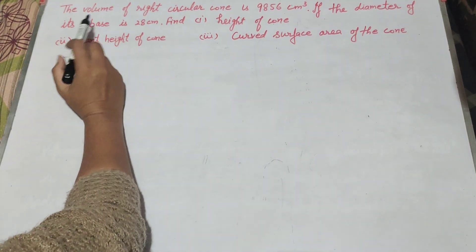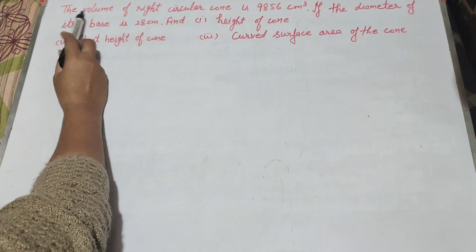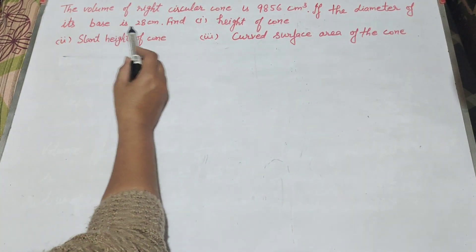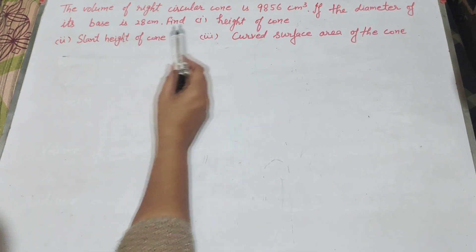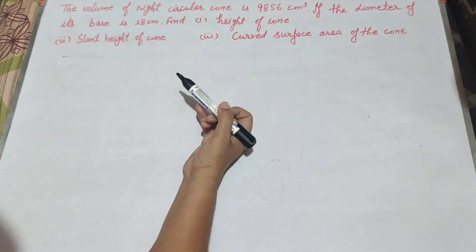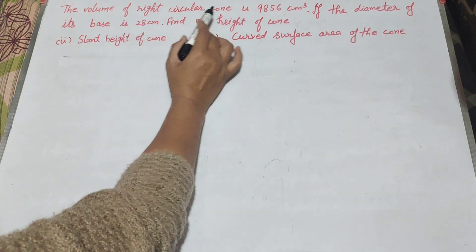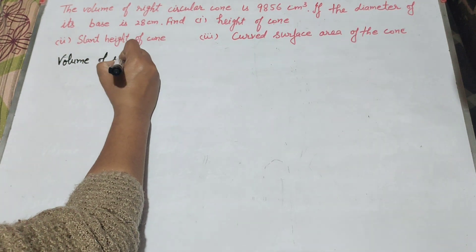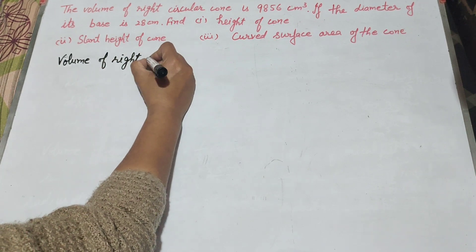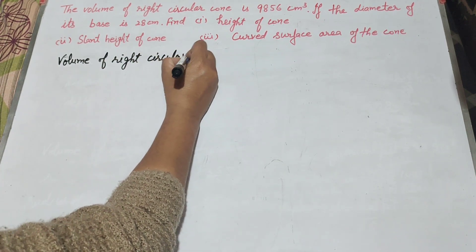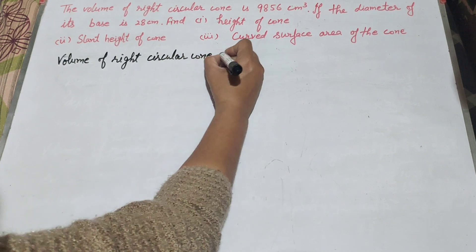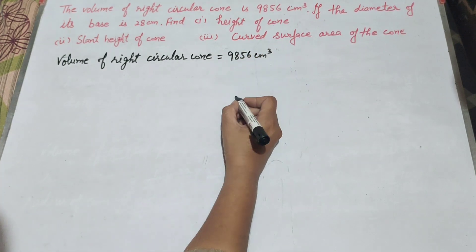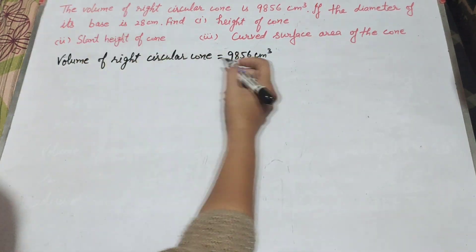Hello friends, welcome to my channel. In this video we discuss the question: the volume of a right circular cone is 9856 centimeter cube. If the diameter of its base is 28 centimeter, find the height of the cone, slant height of the cone, and curved surface area of the cone. Given: volume of right circular cone is equal to 9856 centimeter cube, and diameter of base is 28 centimeter.